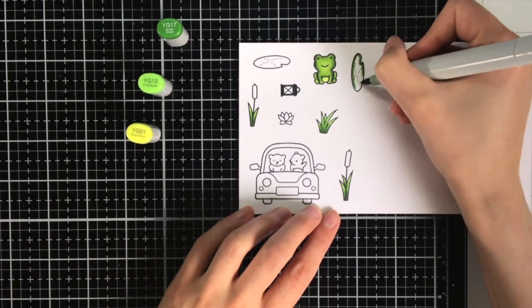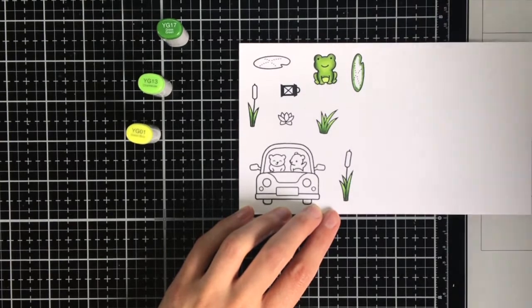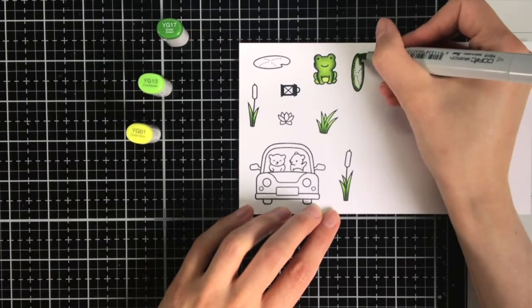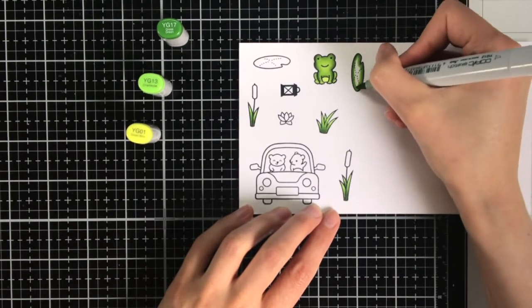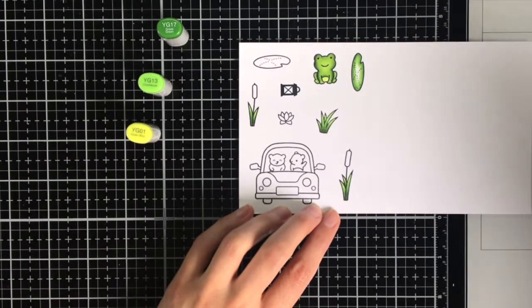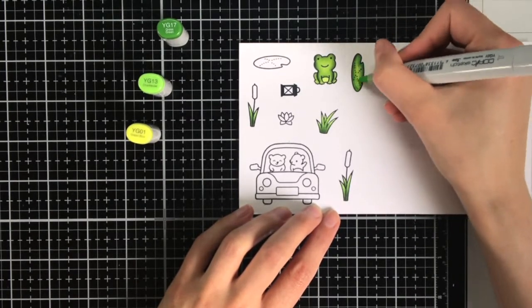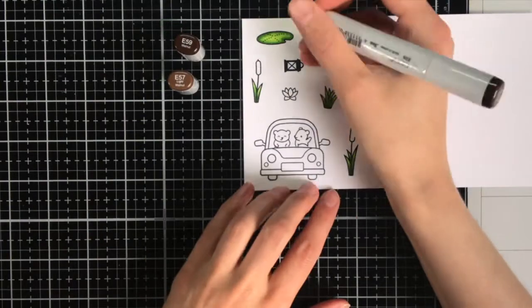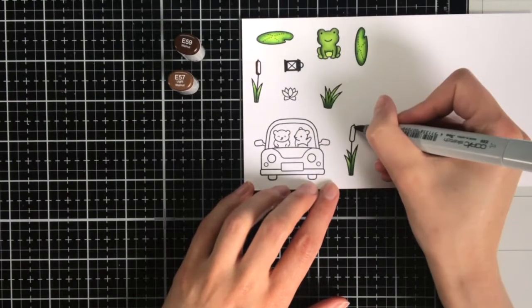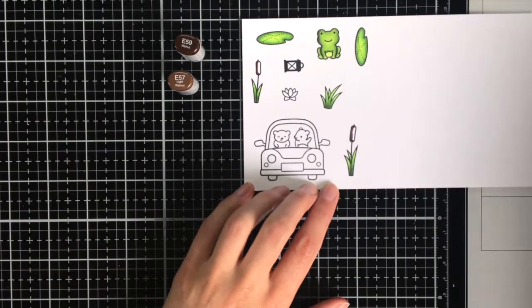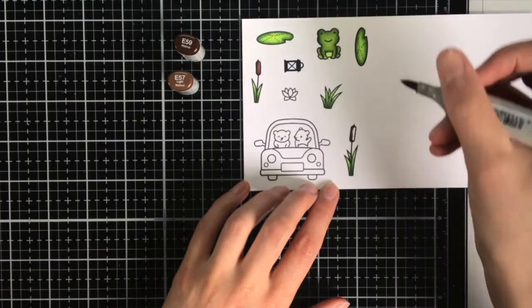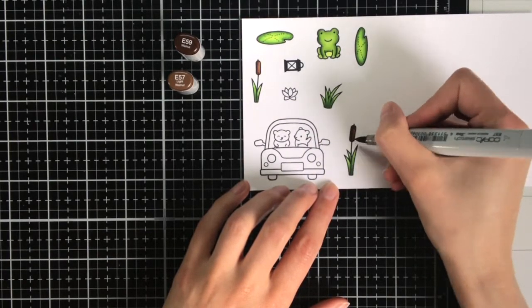Then for the water lilies I am using more vibrant greens. So YG17, YG13 and YG01. I also wanted to mention that I'm not actually showing you all the Copic coloring, because I also always work in two layers because I feel that it gives the nicest result, but then the video would become too long.